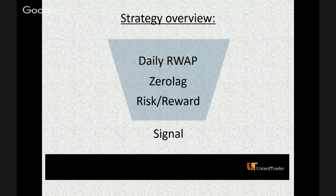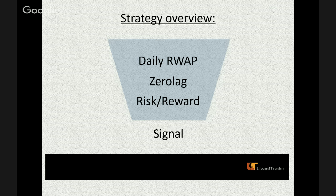Here is the strategy overview. The daily range is created by the Range Weighted Average Price. We want price to be within the value area — within one standard deviation of the RWAP band. We then use the Zero Lag Oscillator to time our entry signals and find our risk-reward ratio by measuring the distance from any landmark support and resistance levels such as the pivots and previous RWAP levels.